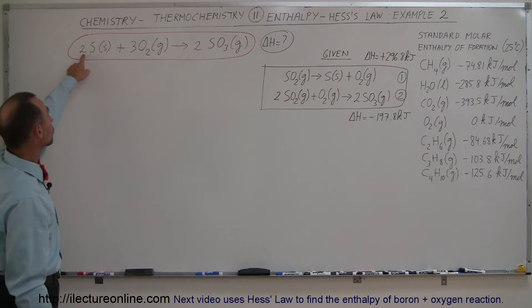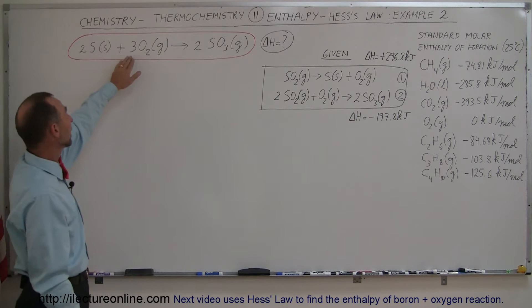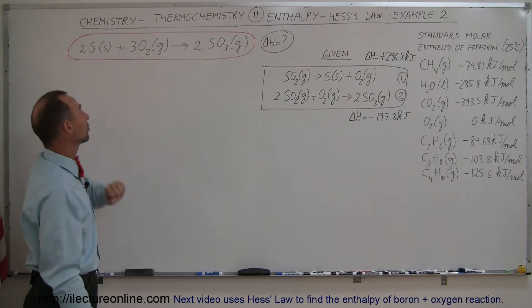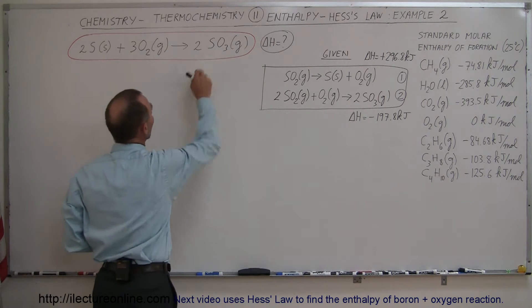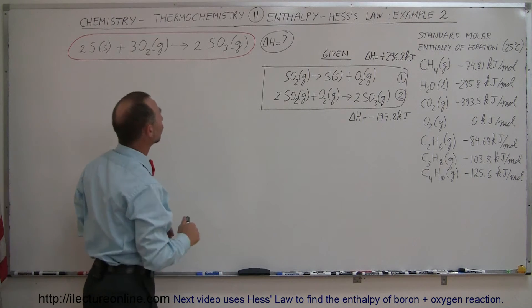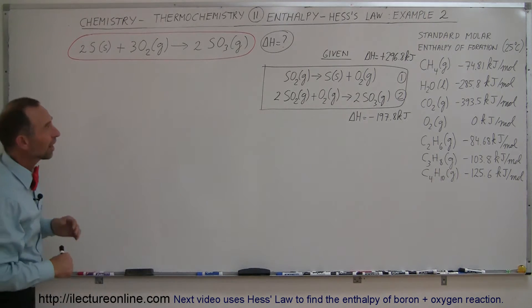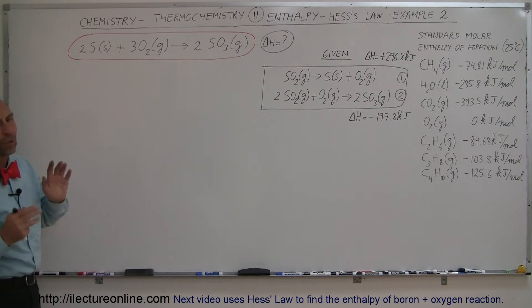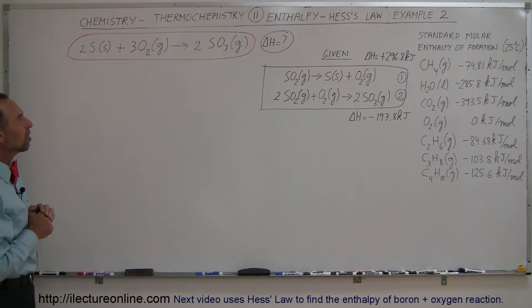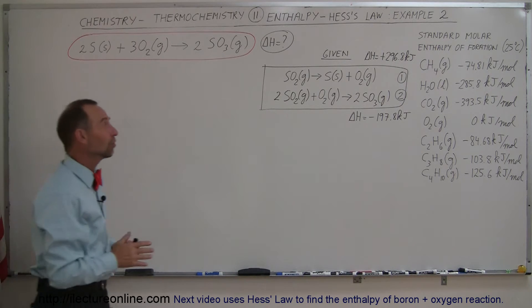We take two moles of solid sulfur, add to that three moles of oxygen gas, and we get as a result two moles of sulfur trioxide. We don't know what the enthalpy change is, but we have some reference equations.